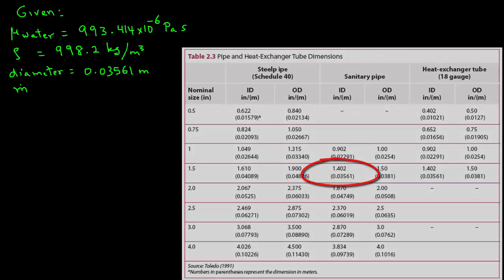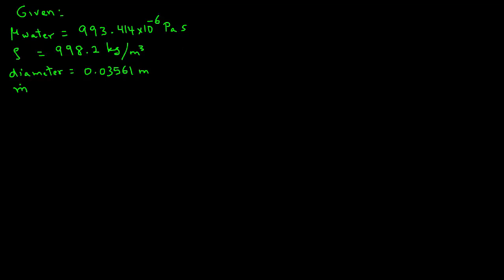The mass flow rate M-dot is 0.8 kilograms per second. The total length of the pipe L is 40 meters. The elevations of the water in the two tanks are Z1 equals 2 meters and Z2 equals 10 meters.